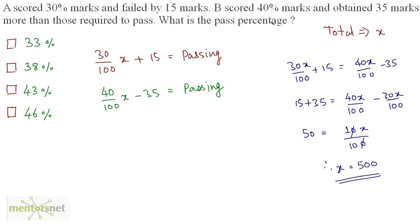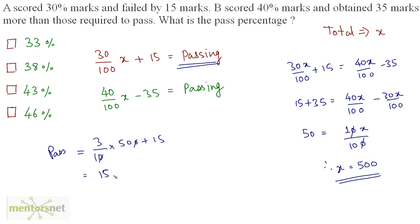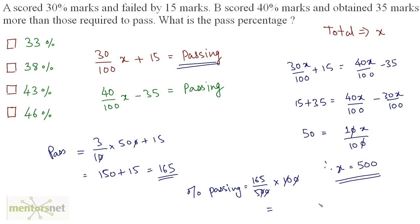The total marks are 500. Now we need the pass percentage, and for that we need the passing marks. Taking the first equation: 3 by 10 times 500 plus 15 gives the passing marks. This equals 3 times 50, which is 150 plus 15, equal to 165. Passing percentage is 165 out of 500 times 100, which gives 33%. So option A is the right answer.